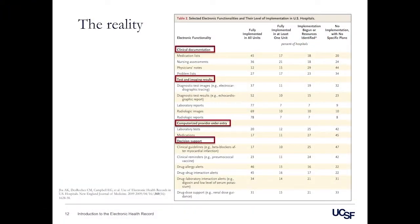Let's look at what modern electronic health records actually do. There's a study Ashish Chah did in 2009 in the New England Journal looking at what really makes an electronic health record. There are a few categories. The first is clinical documentation — not just clinical visits, but problem lists, medication lists, and nursing assessments. The second is test and imaging results — not just labs, but radiology images and pathology. It's a real breadth of information.